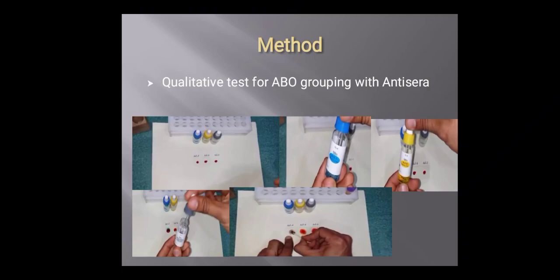First of all, what you have to do is you have to swab your index finger with the cotton balls which is dipped in spirit and take a blood sample with the help of a lancet.